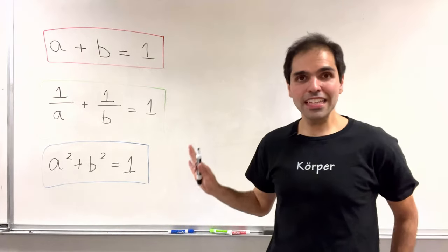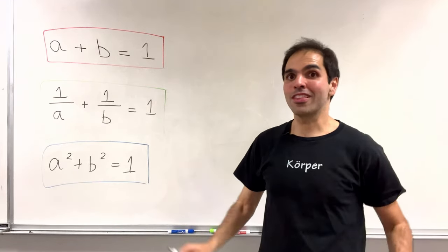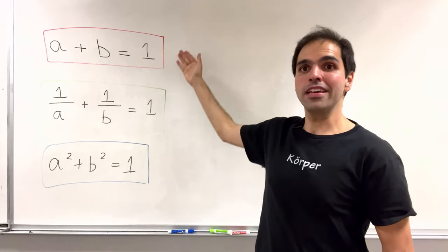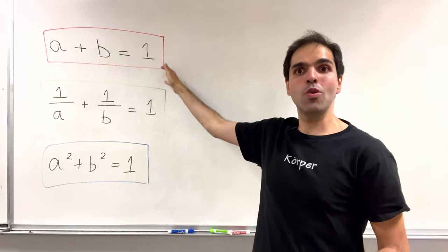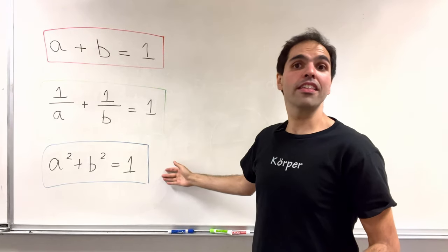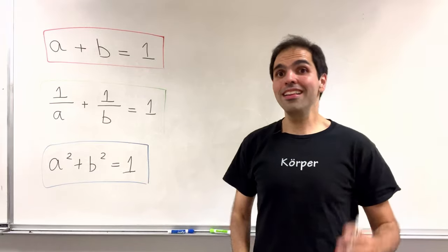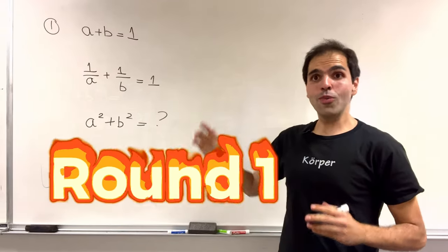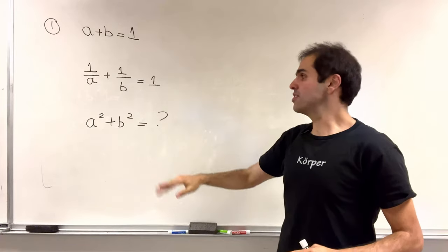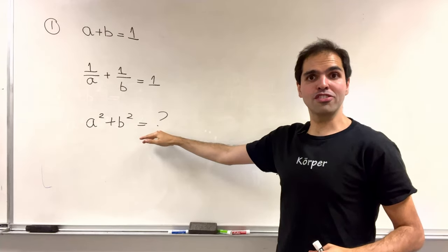Thanks for watching and let's play a fun little game called which 2 implies the third. In other words, if two numbers add to 1 and the reciprocals add to 1, is the third thing true? Let's find out. Round 1. The sum is 1, sum of reciprocals is 1, what is the sum of squares?